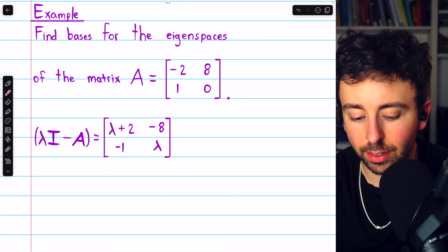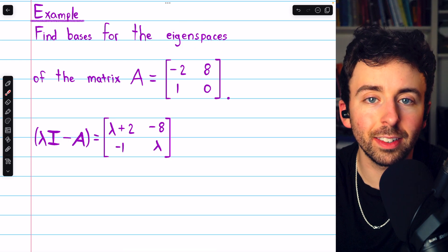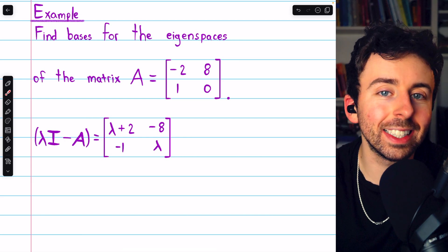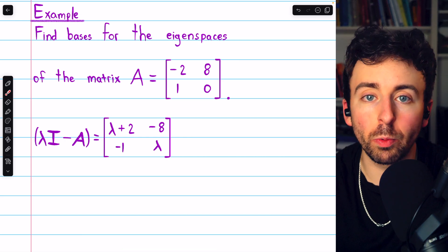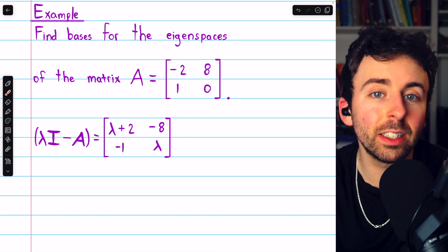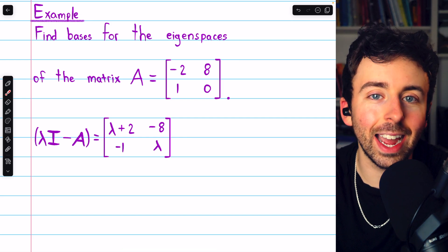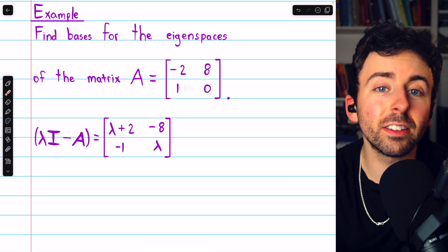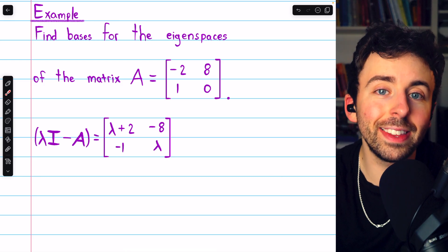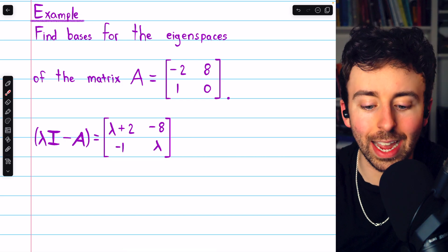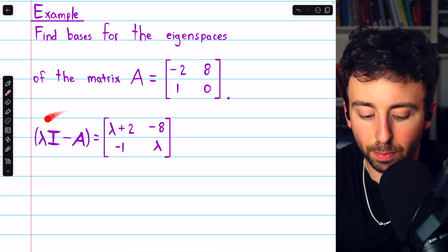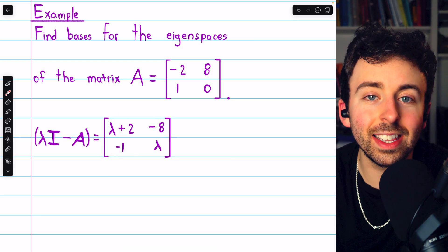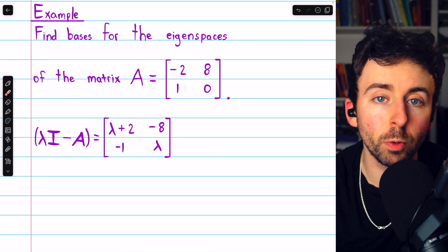Let's do an example with this 2x2 matrix. We want to find bases for the eigenspaces. There's an eigenspace corresponding to each eigenvalue, and generally a matrix will have multiple eigenvalues, so we're going to need to find a basis for each corresponding eigenspace. We need to find the eigenvalues so that we can then find the corresponding eigenspaces. So we write this matrix, lambda I minus A, as seen here, and now we'll find the determinant of this matrix to get the characteristic polynomial.